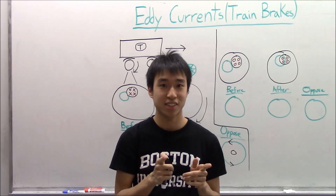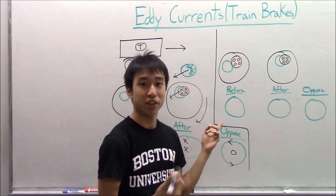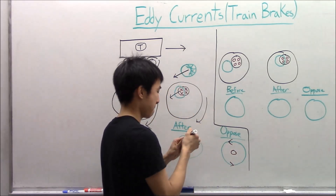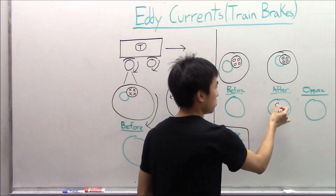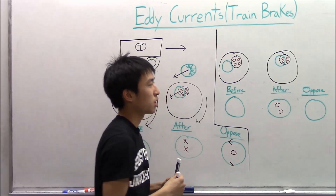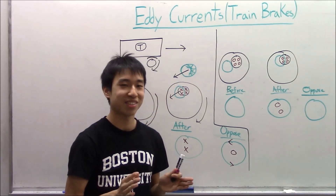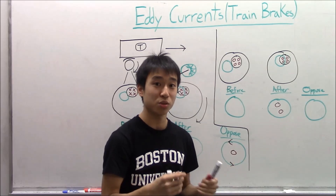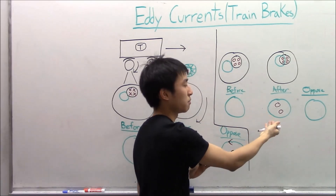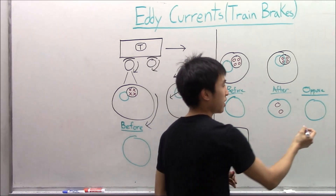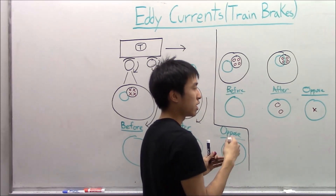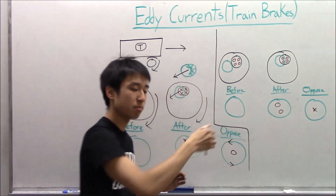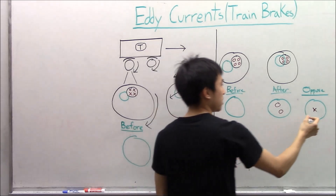Ready for the answer? Let's figure it out. So before, there are no field lines going in or out. And then afterwards, we have two field lines coming out of the board at you. So what kind of opposing induced current must be generated to fight this change in flux? If you said a field line that goes into the board, you're correct. And the induced current that has to generate this field line must be clockwise, because of the right-hand rule.